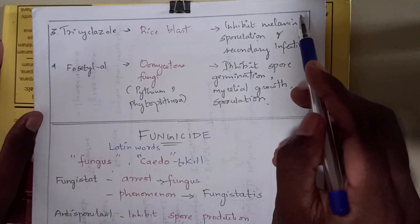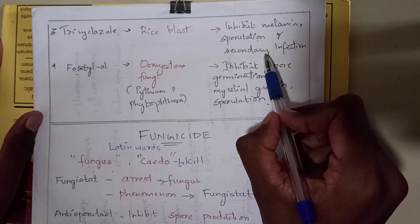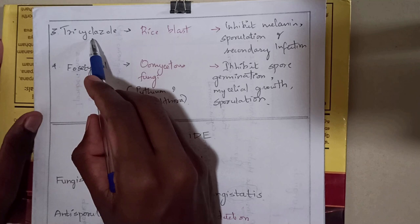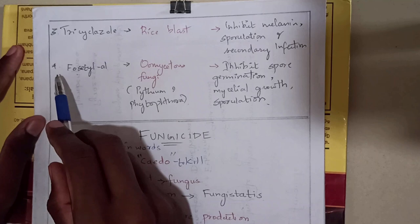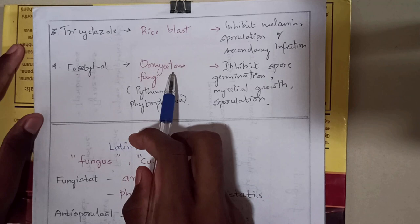Tricyclazole is an MBI, a melanin biosynthesis inhibitor of fungi. The fourth compound is phosphatase, used against oomycete fungi such as Pythium and Phytophthora species. It inhibits spore germination, mycelial growth, and spore lesion — the spore protection in the host.